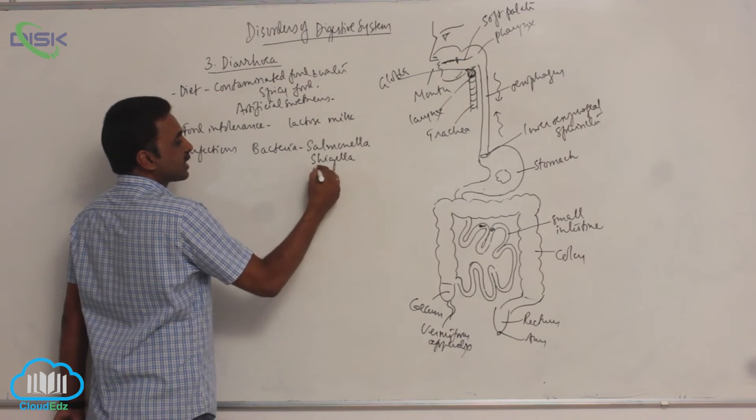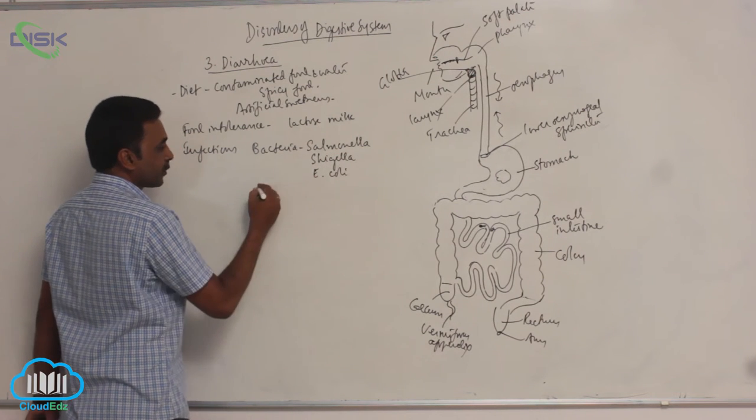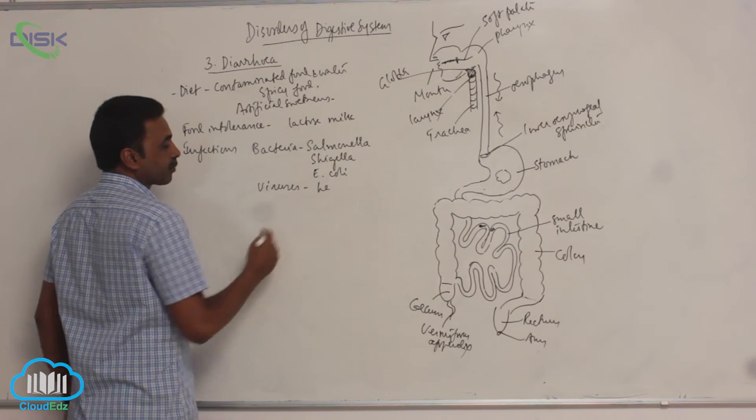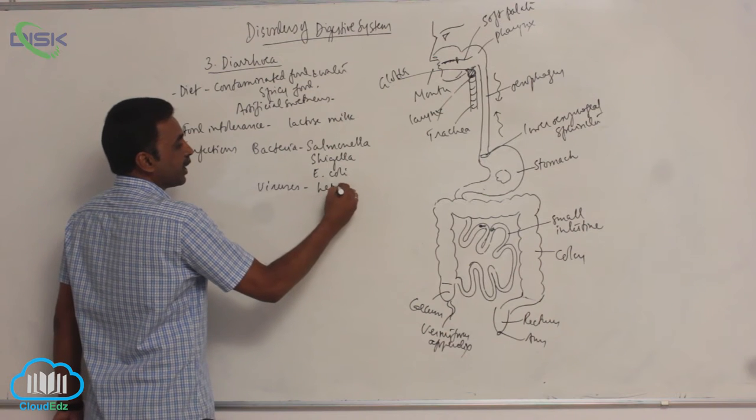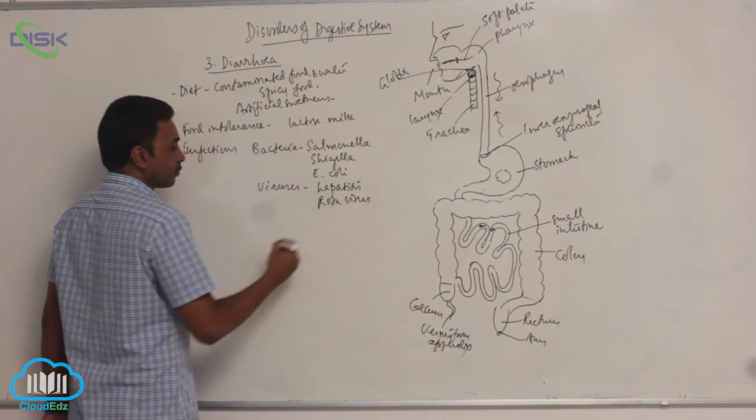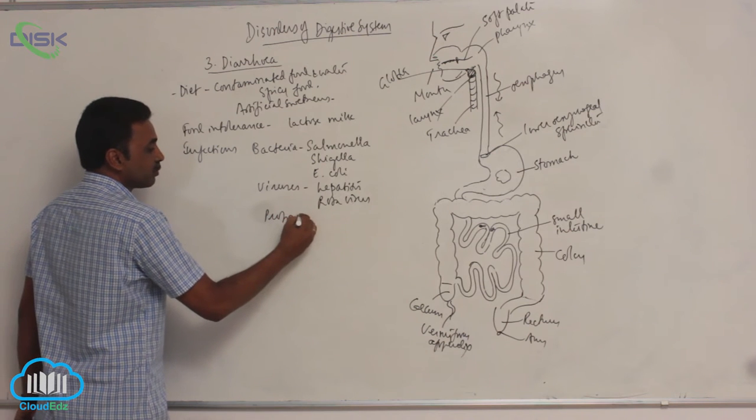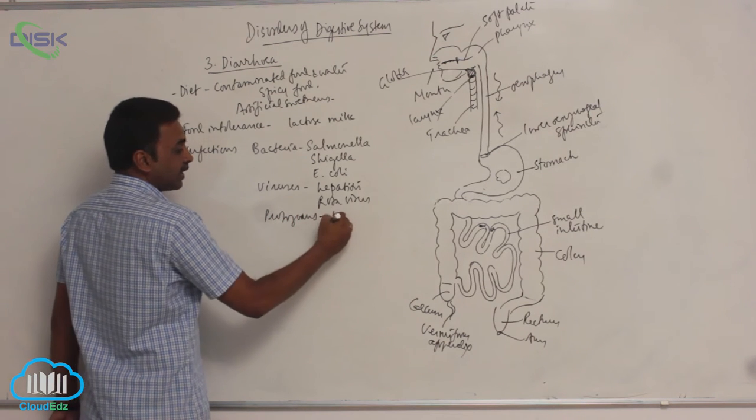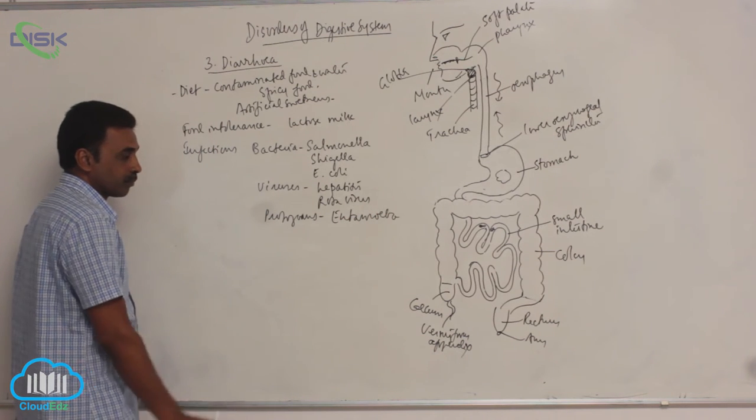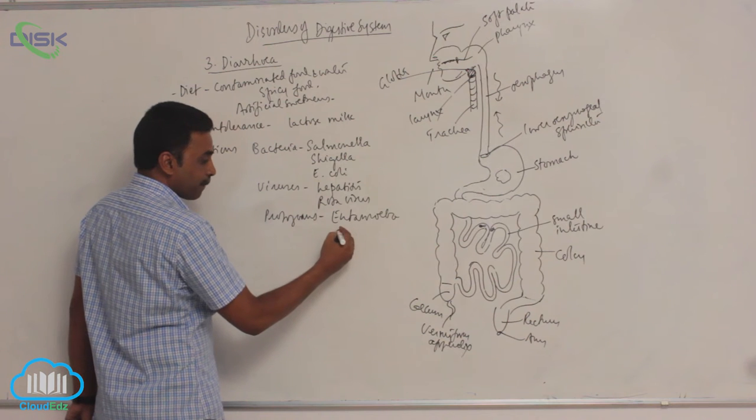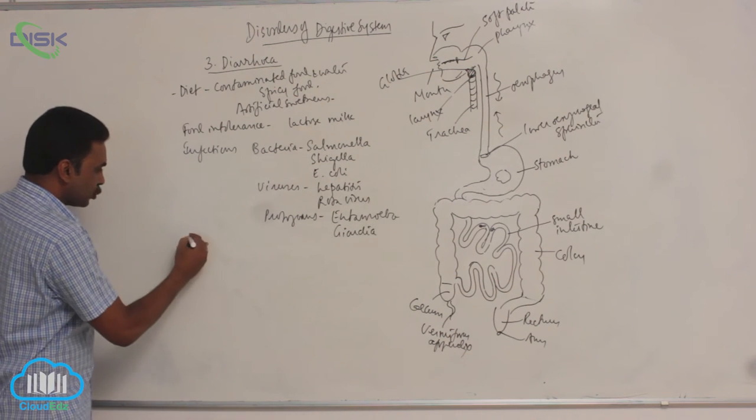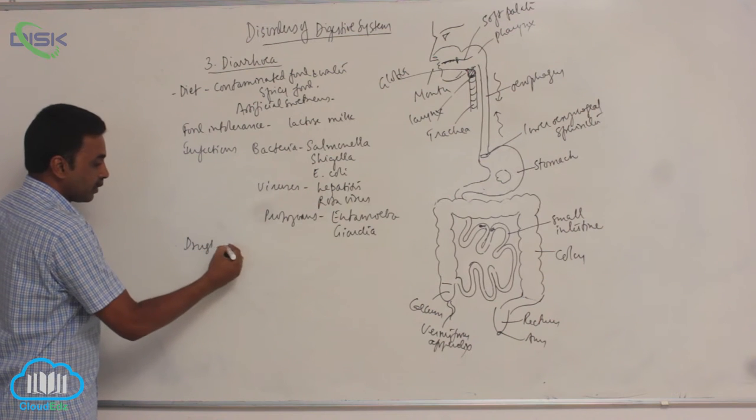Various viruses like hepatitis virus, rotavirus. Various protozoans like Entamoeba, like Giardia. And various drugs like antibiotics, antacids, laxatives, antihypertensive drugs.